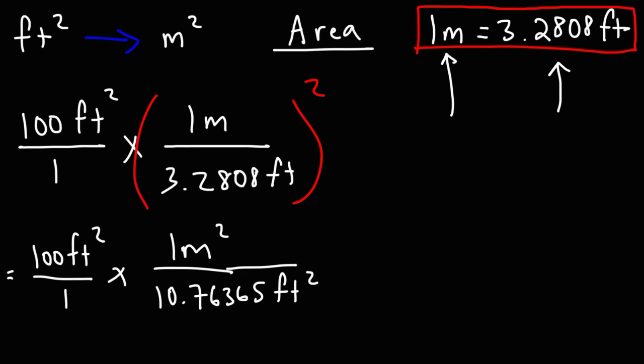So as we can see, the unit square feet will cancel. But this time, we're going to divide instead of multiply. So it's going to be 100 divided by 10.76365. And so the answer is going to be 9.29 square meters. So that's how you can convert from square feet to square meters.